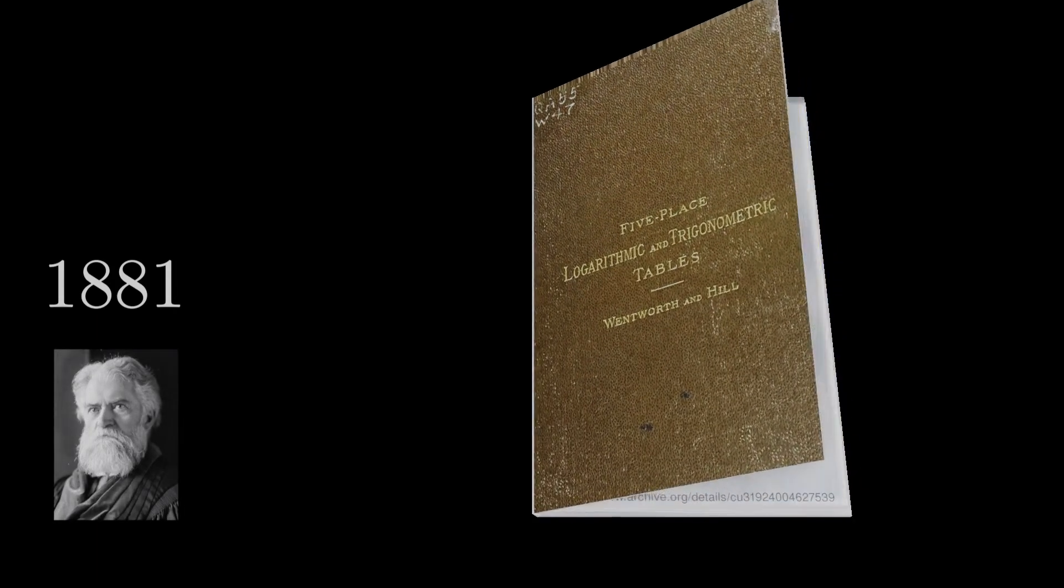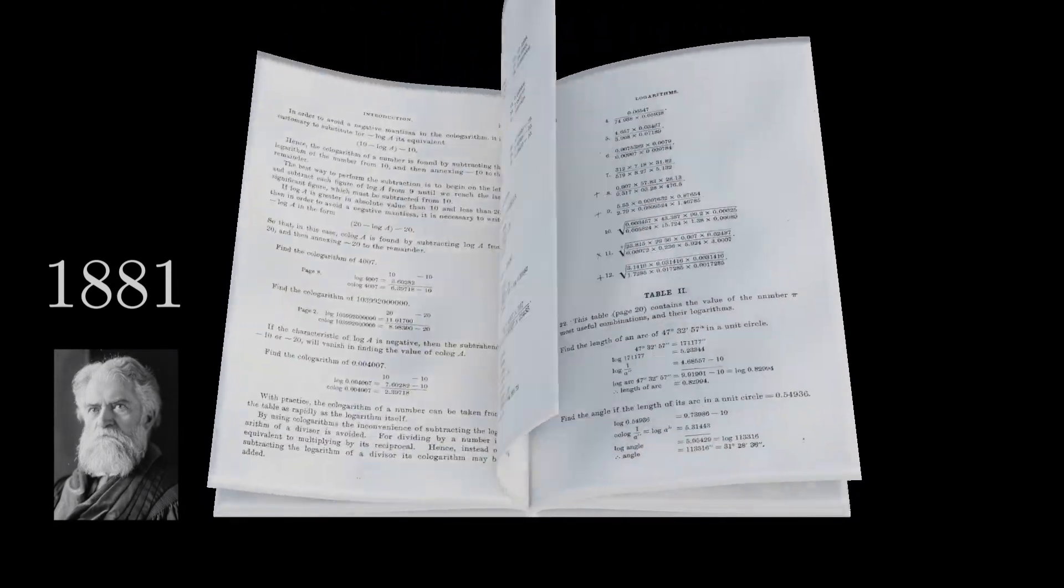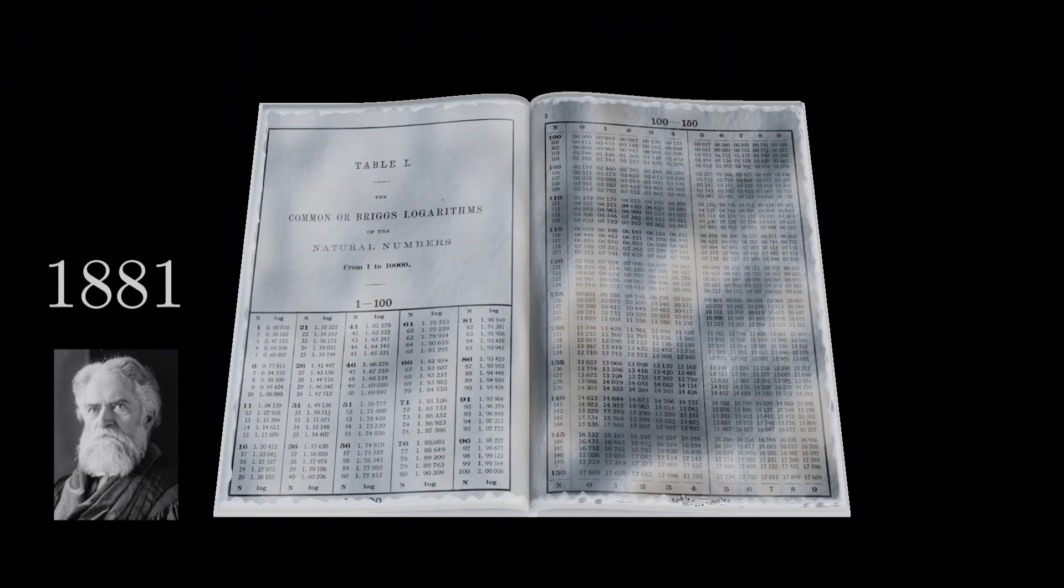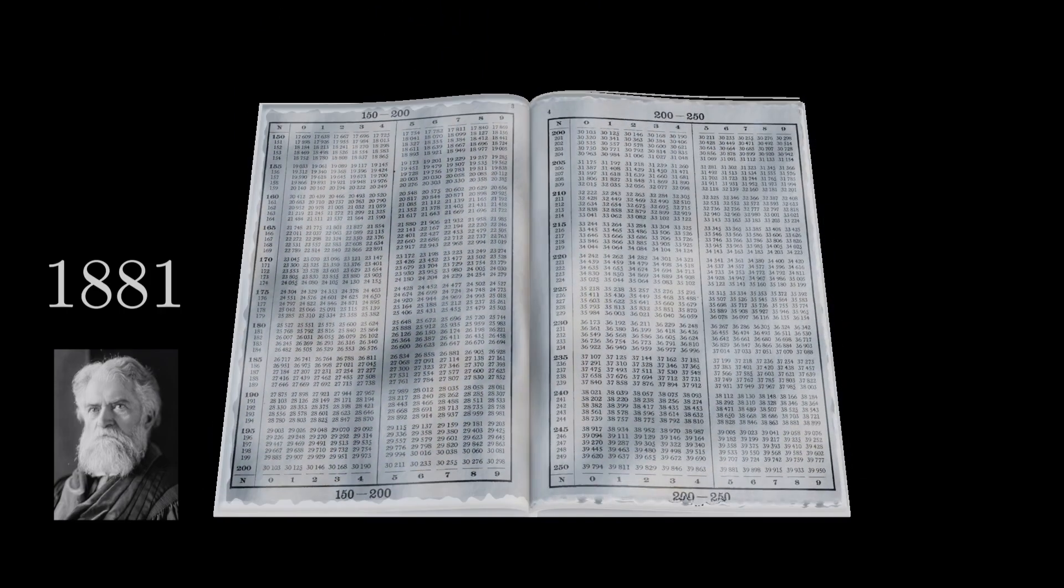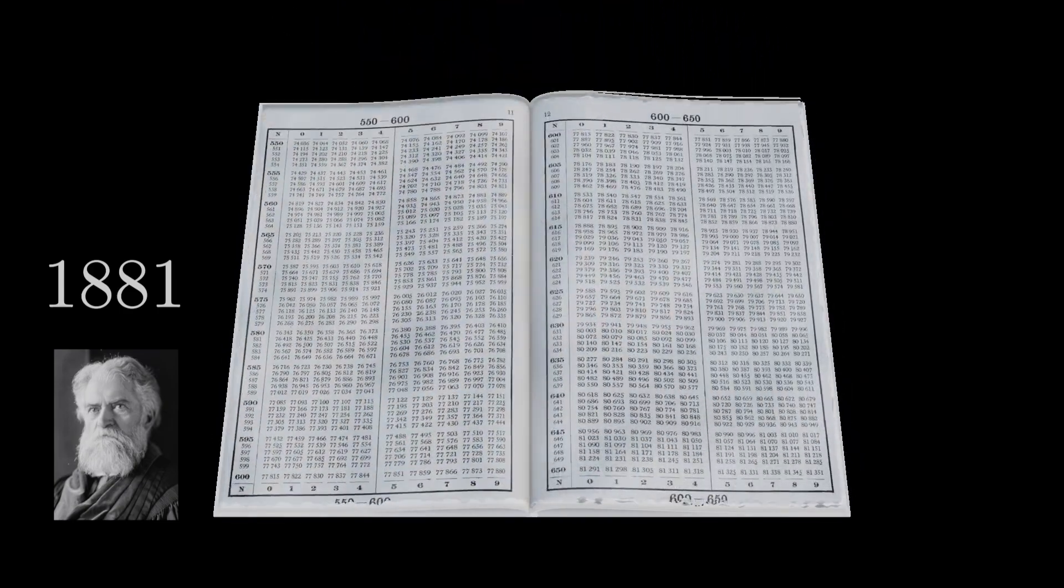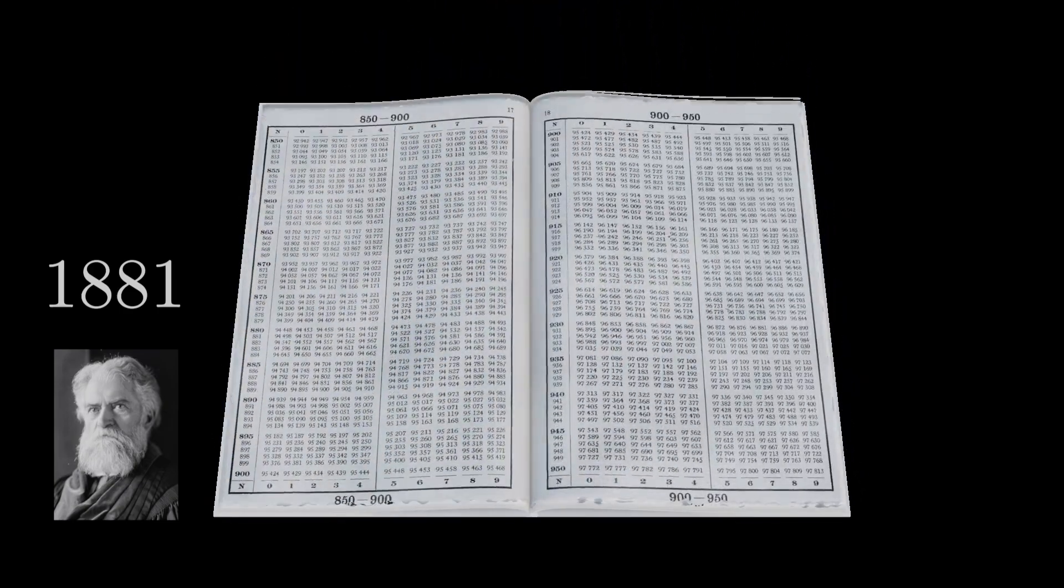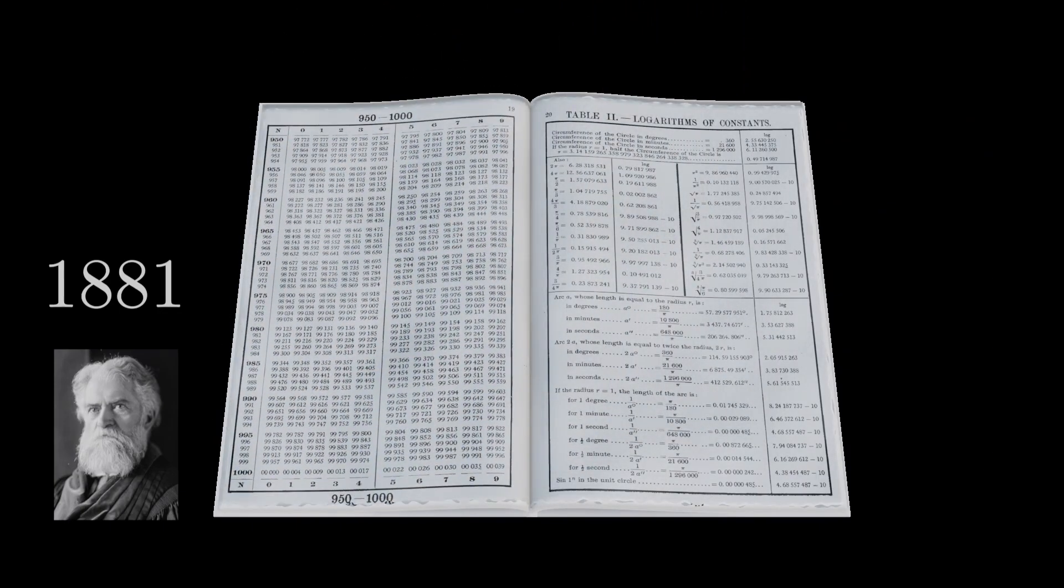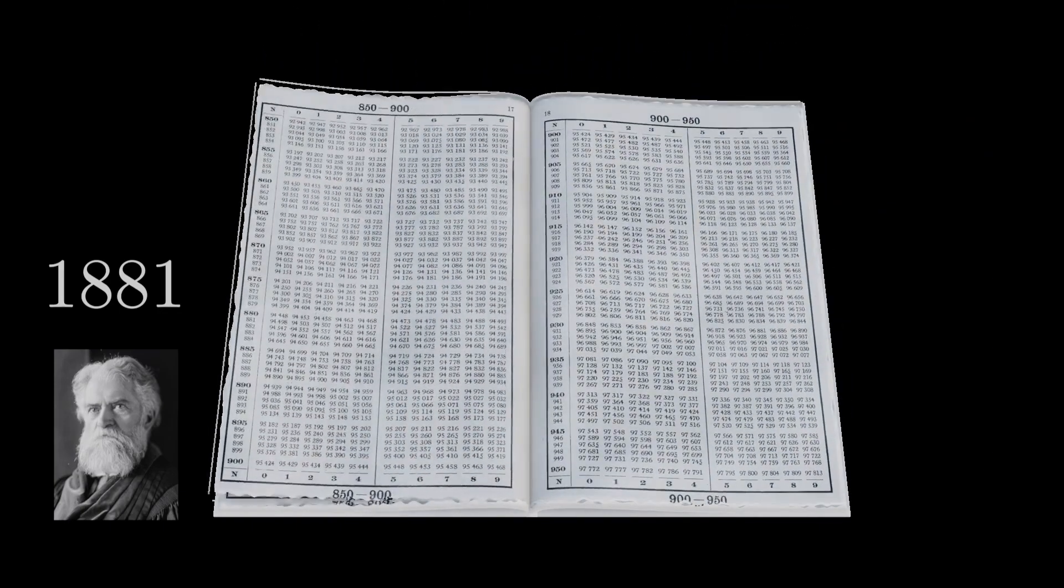As the story goes, in 1881, the astronomer Simon Newcombe realized that earlier pages of his logarithm tables were much more worn than other pages. He concluded that the numbers with leading digits 1 or 2 must occur more frequently in his computations than others.